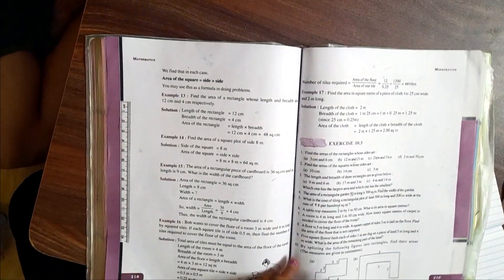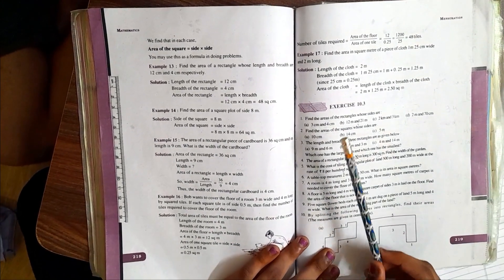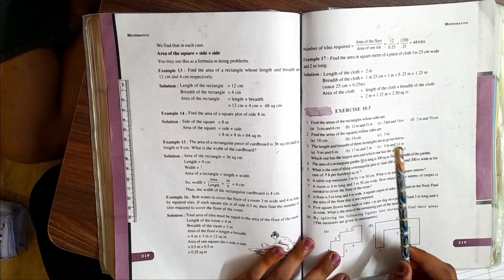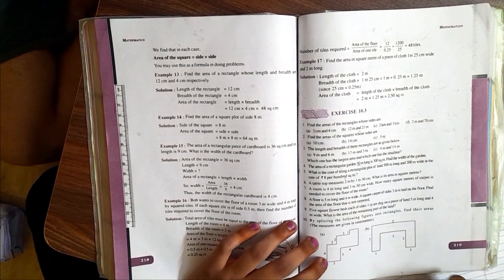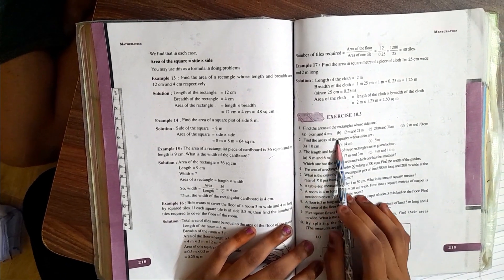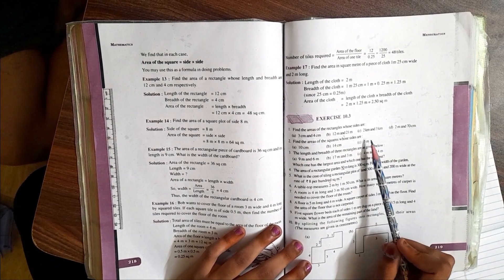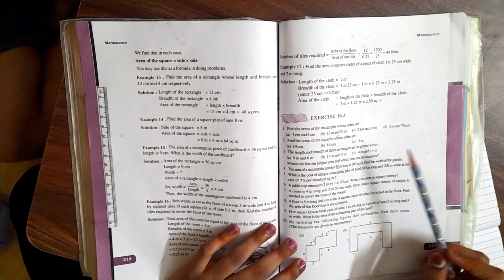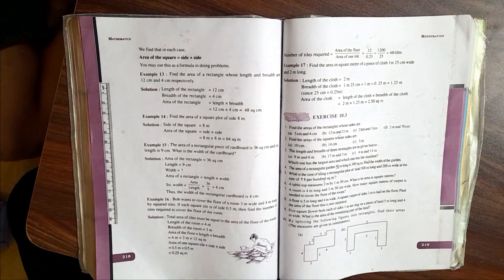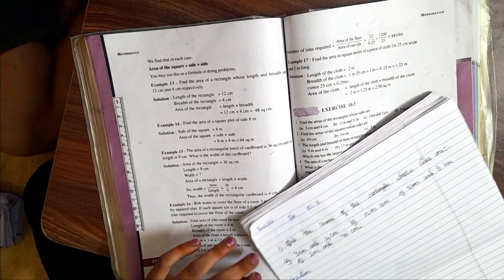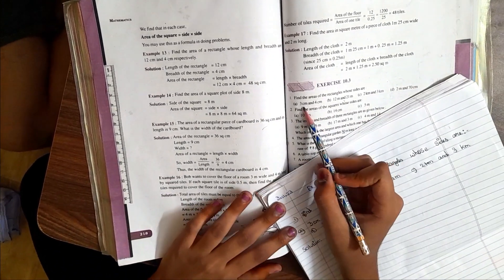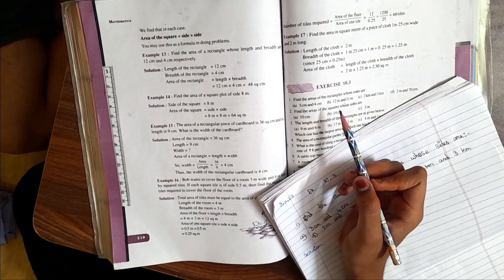The first question is, find the areas of the rectangle whose sides are 3 cm and 4 cm, 12 m and 21 m, 2 km and 3 km, 2 m and 70 cm. Please check the meter and cm.